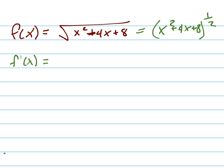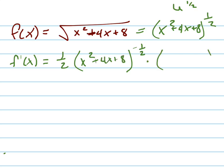The derivative of the outside function treats it like u to the one-half power, so the derivative of that is one-half u to the negative one-half. Leave the inside unchanged and then multiply by the derivative of the inside function. The derivative of the inside function is just a polynomial — it's just 2x plus 4.